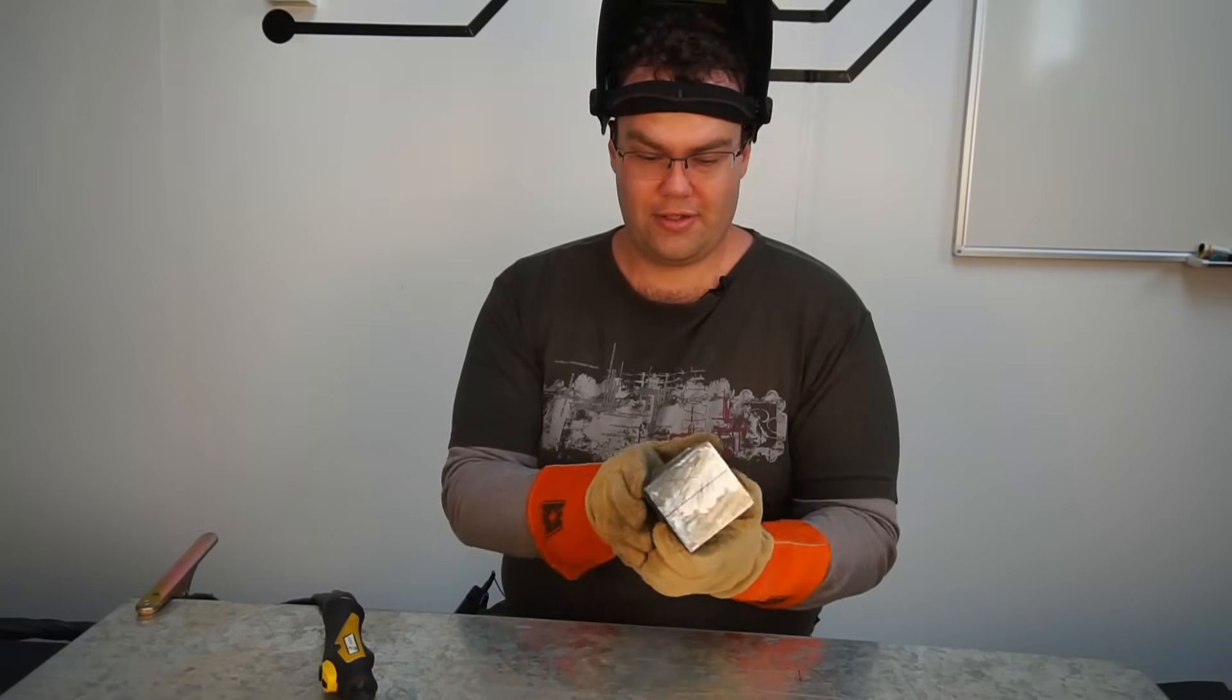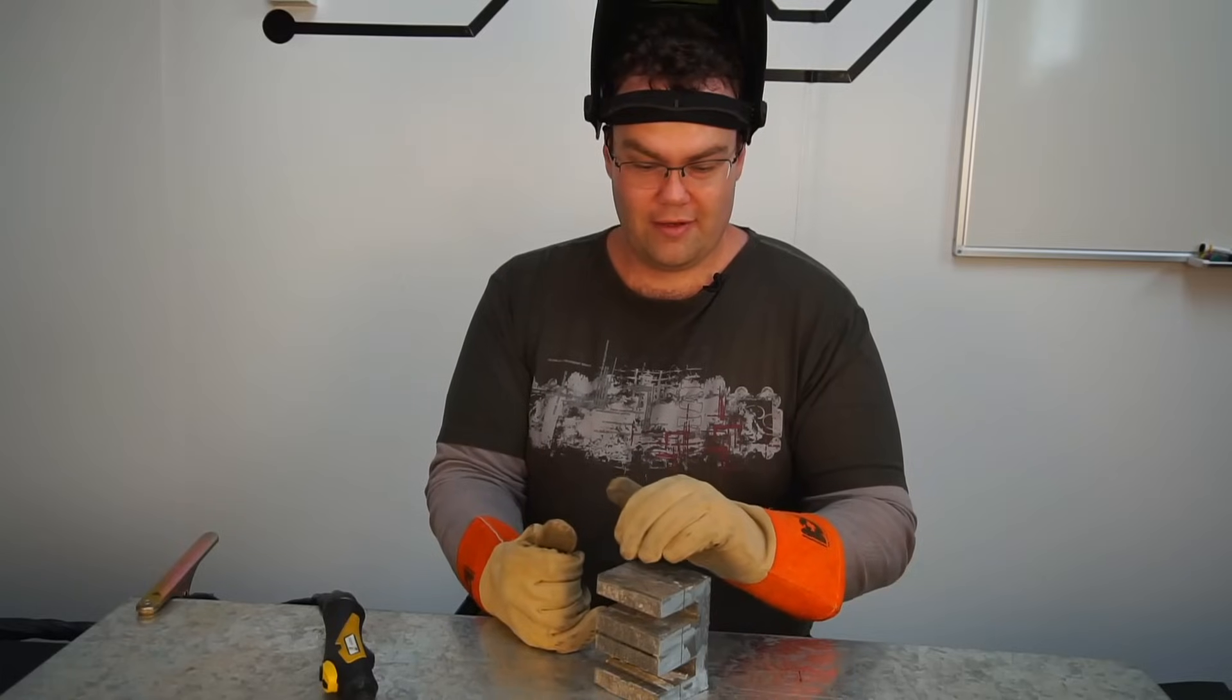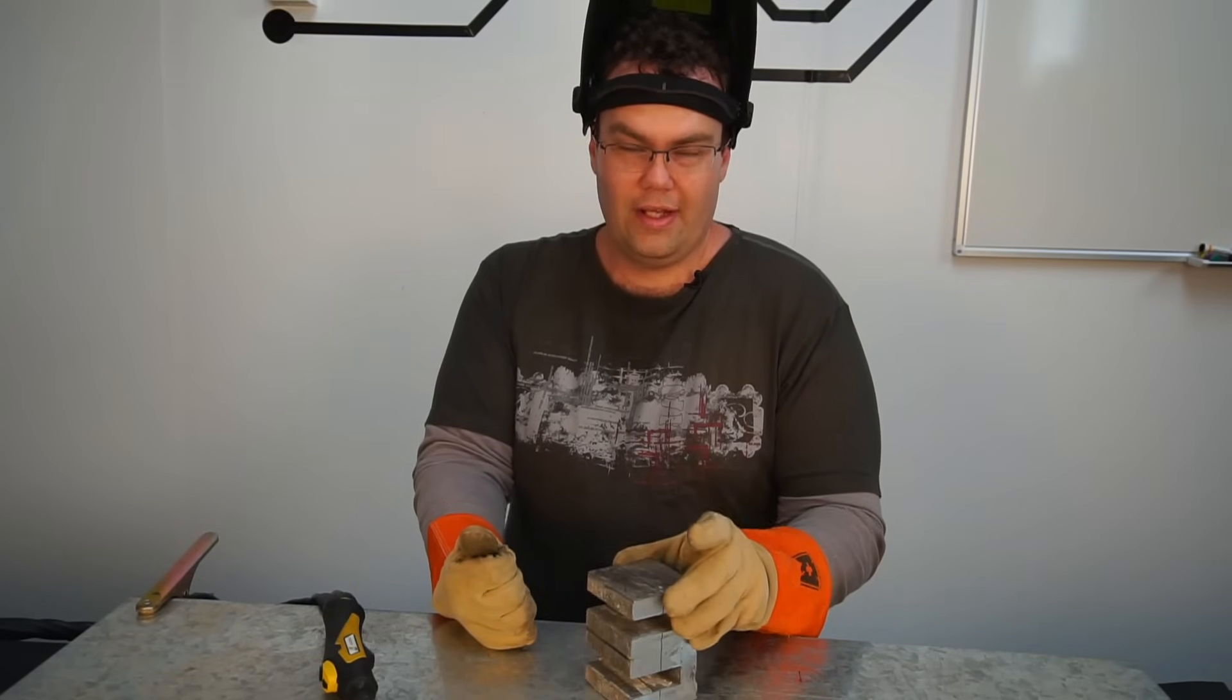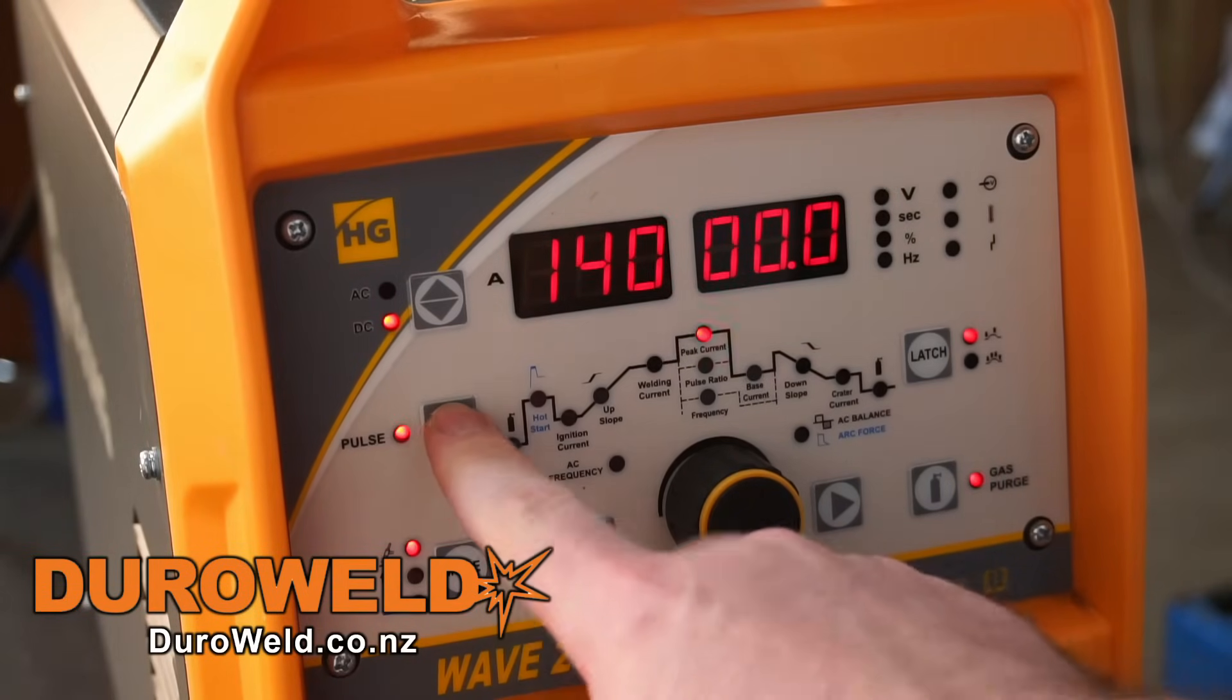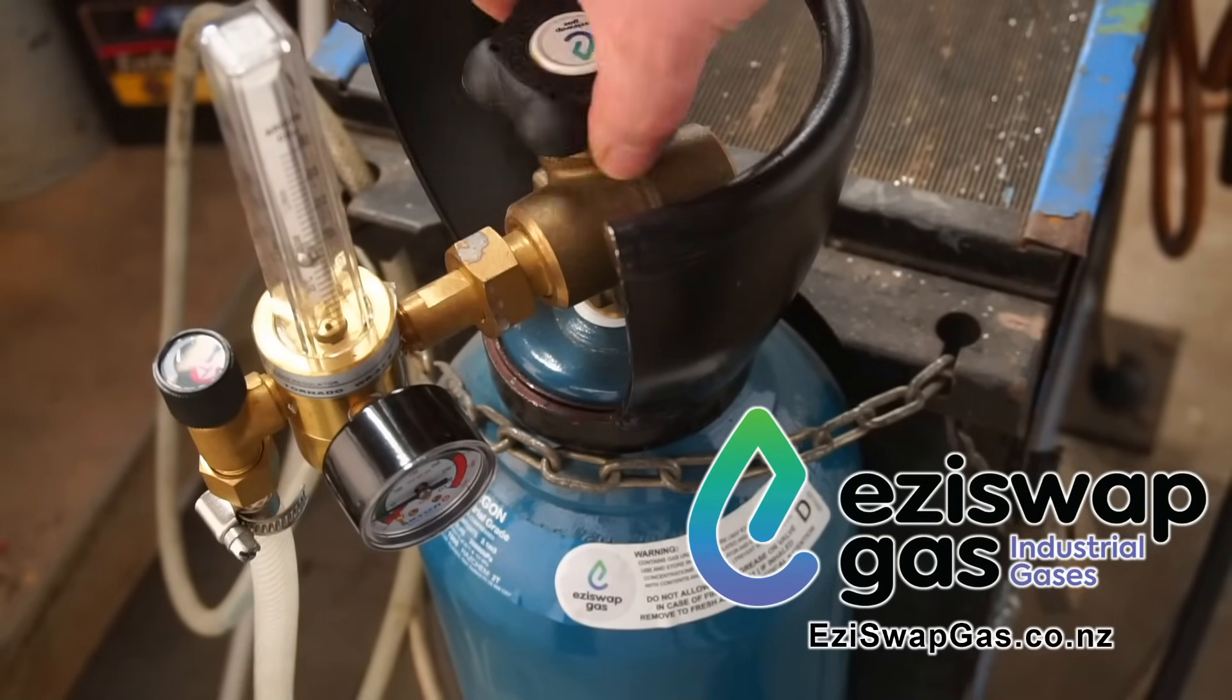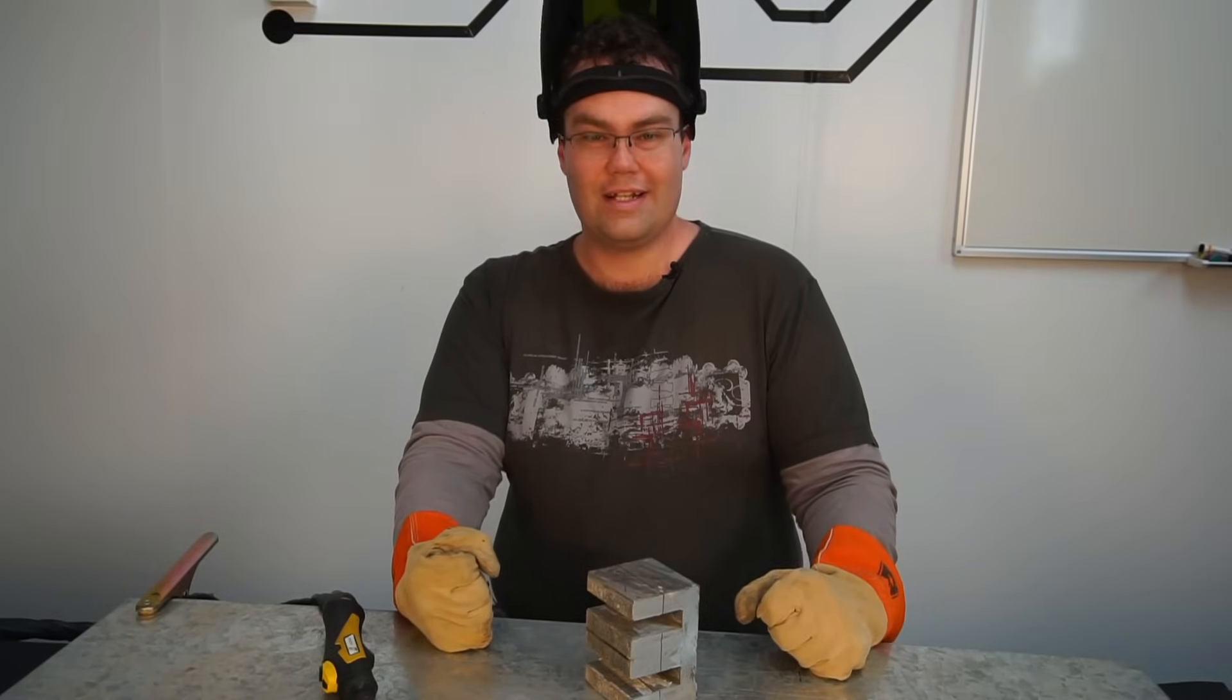Right, so I've got my transformer core all prepped ready to weld. I'm not going to be using any filler rod for this. I'm just going to be fusing the layers together using my TIG welder. I'm going to do that in a few different locations to keep all the layers of the core together. Now I do want to quickly shout out to DuraWeld for hooking me up with their awesome Wave 200D TIG welder, and also to EasySwap Gas for supplying me with an argon bottle. Thank you to both of you, you guys are awesome. Thank you for supporting videos like this on my channel. All right, let's get to welding.